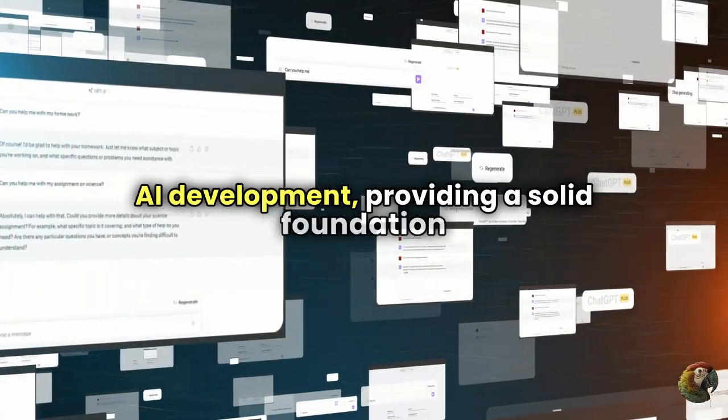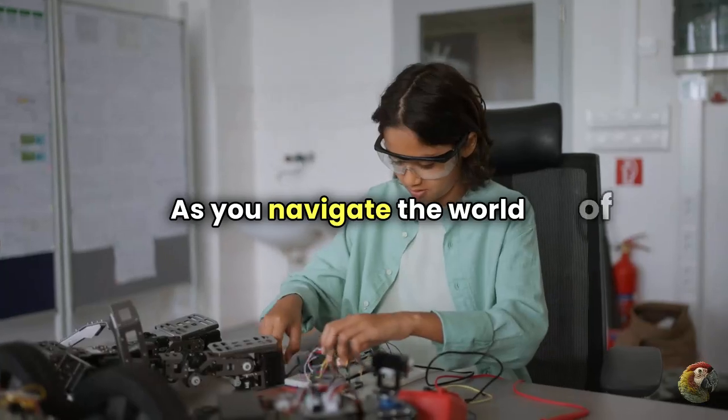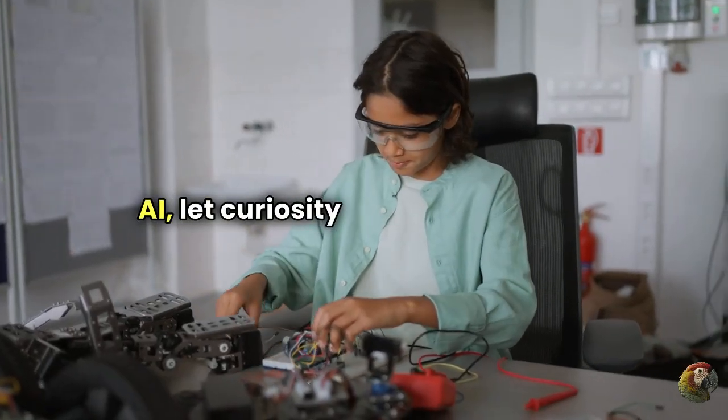Ground truth is the cornerstone of AI development, providing a solid foundation for building intelligent and trustworthy systems. As you navigate the world of AI, let curiosity be your compass.